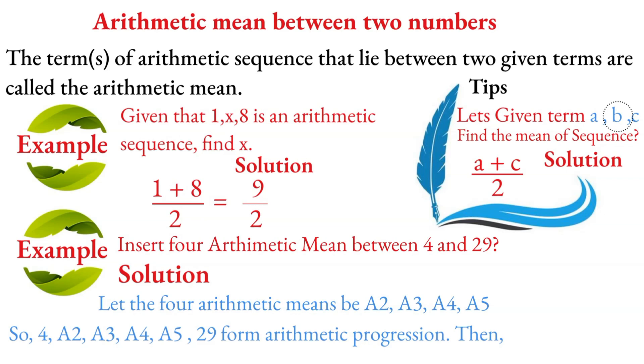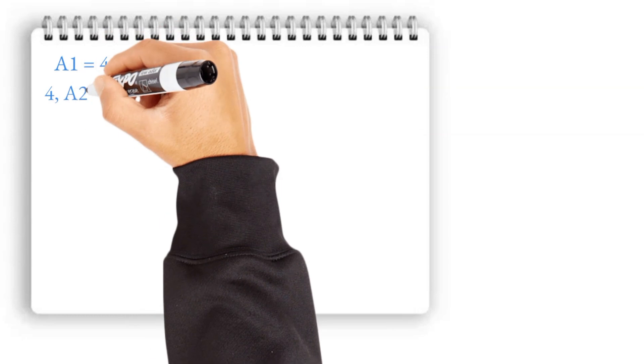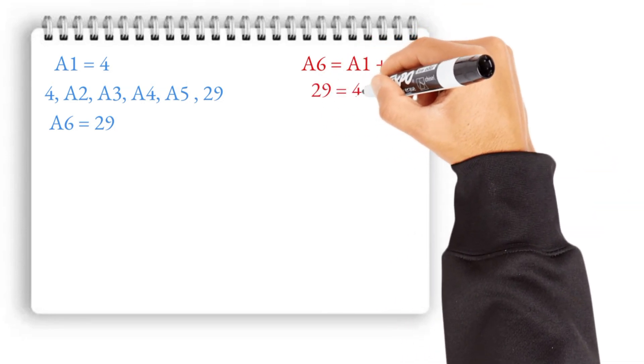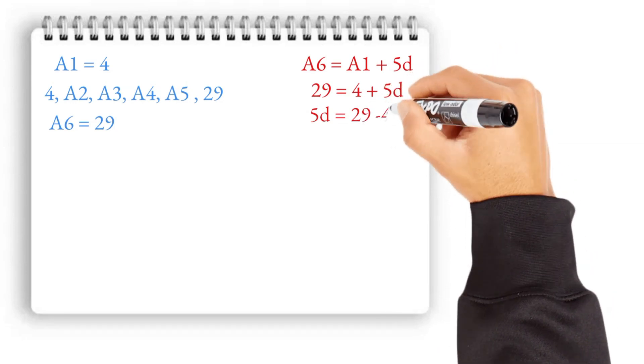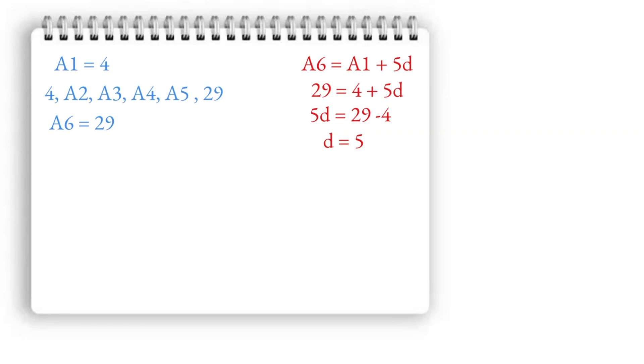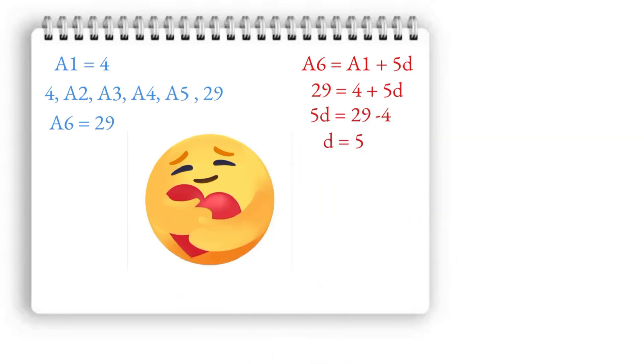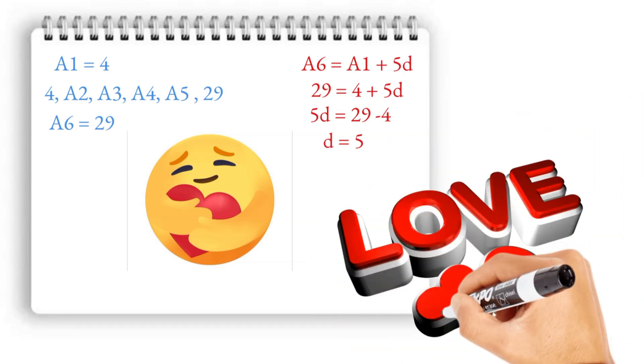With 4 arithmetic means inserted between 4 and 29, the last term A6 equals 29 and A1 equals 4. So A6 equals A1 plus 5D, which gives 29 equals 4 plus 5D, therefore D equals 5. So A2 equals A1 plus D, A3 equals A1 plus 2D, and continuing, we get the arithmetic means between 4 and 29 with common difference 5.